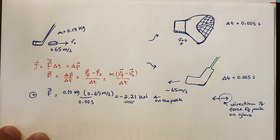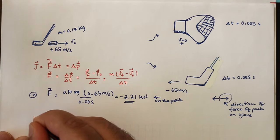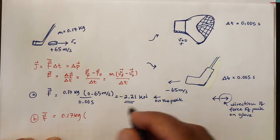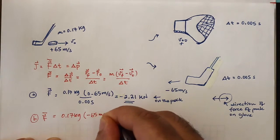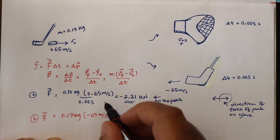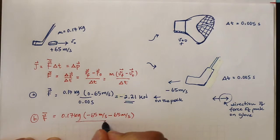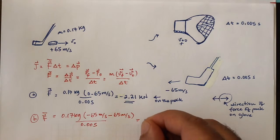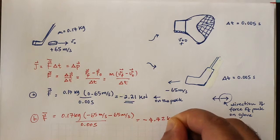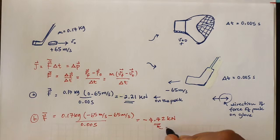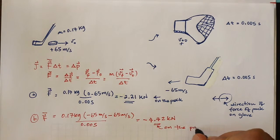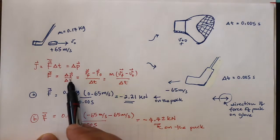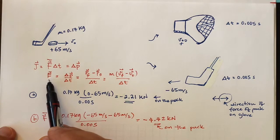Now for part B, the only thing different is the final velocity. The average force equals the mass multiplied by (v_final − v_initial) / Δt. The final velocity is minus 65 meters per second, the initial is 65 meters per second, divided by 0.005 seconds. That's minus 65 minus 65, which is double what it was before, so the result is 4.42 kilonewtons. Again, this is the force on the puck since I'm calculating the change in momentum of the puck.